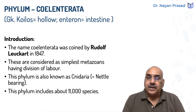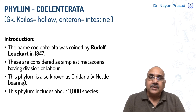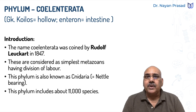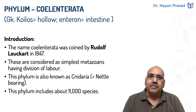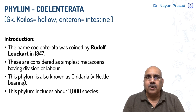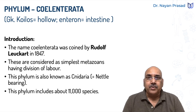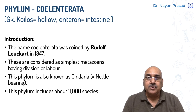These are considered the simplest metazoans having division of labor. Division of labor means particular cells unite to perform a particular function. When cells unite and perform a particular function, this is called a tissue. So this is the first group of multicellular animals having tissues.